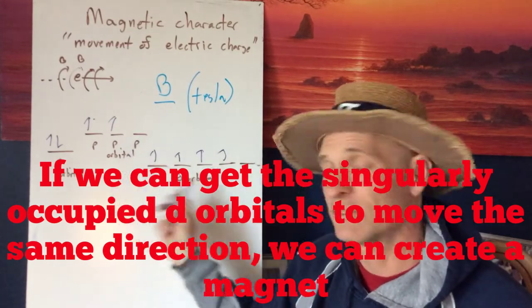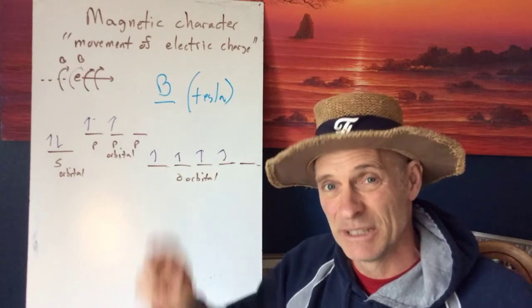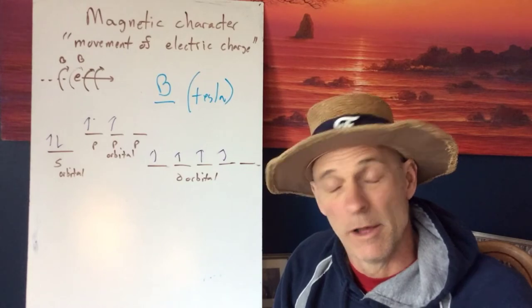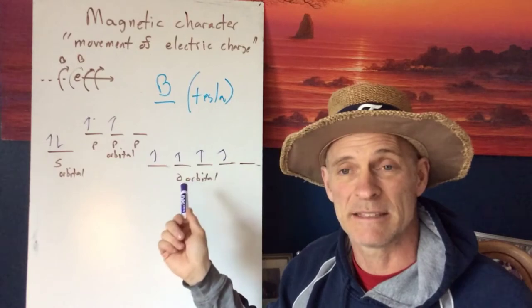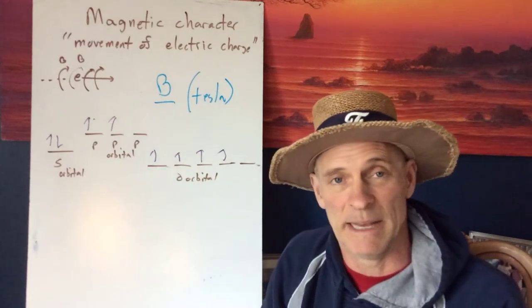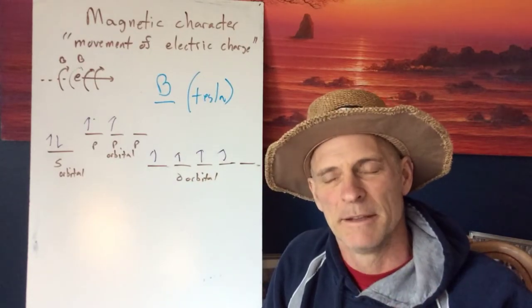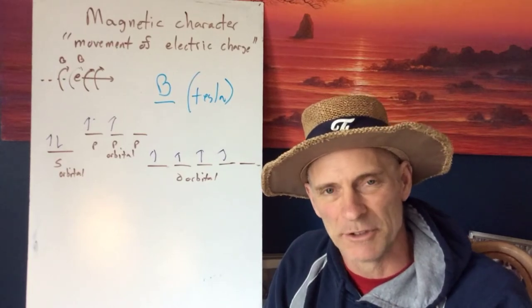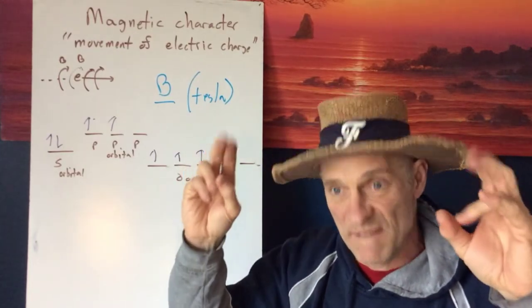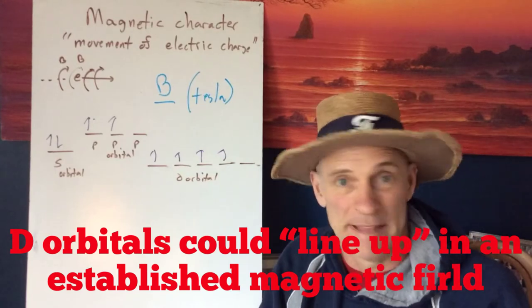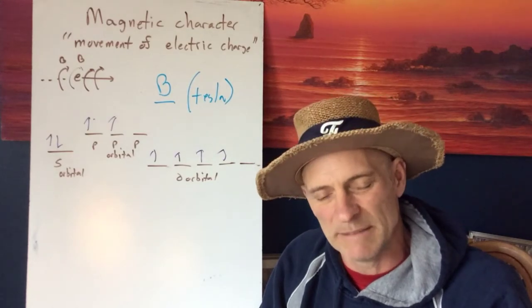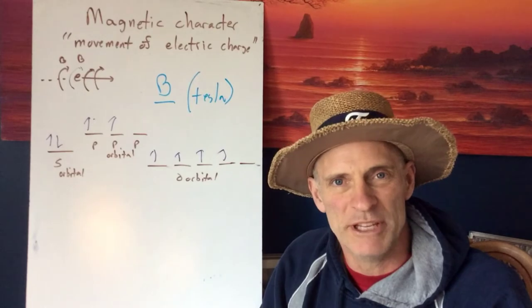Of course, we'd all have to get the electrons doing the same thing. That means spinning the same direction. Well, how would we do that? Well, what we could do is we could place a set of this material, let's say iron, for example, which has singularly occupied D orbitals, we could put that next to an established magnetic field, and that magnetic field would interact with these D orbital electrons, the ones that are available to magnetize. That means to get spinning in the same direction. So we could temporarily magnetize something by simply arranging the available D orbital electrons.